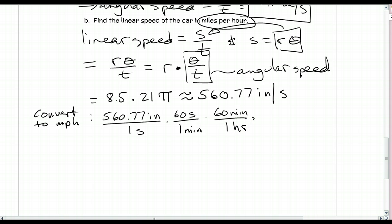We're doing unit analysis like in science classes. That gets us to hours; now convert inches to miles. One foot has 12 inches, and one mile is 5,280 feet. Plugging into the calculator, the linear speed is about 31.86 miles per hour.